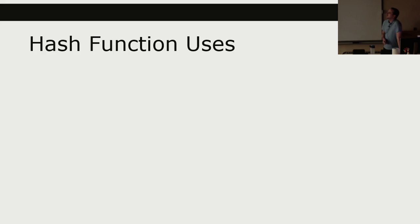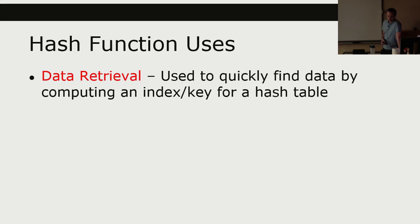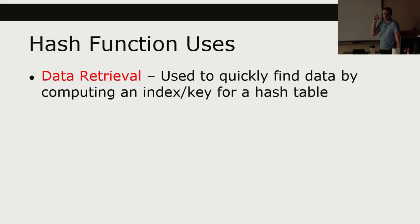So when might we want to use hash functions? One of the main reasons is data retrieval — it can be used to quickly find data by computing an index or key for a hash table. Let's say you were trying to implement a phone book and look up your friend's phone number. You could have an array you continuously grow, but with a million numbers you'd have to iterate through everything to find a name. With a hash table, you run the name through, compute an index, and look it up right away.